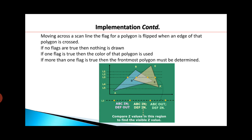If more than one flag is true, then the frontmost polygon must be determined. If you see the figure and consider scan line N3 — N3 is intersecting edges AB and DE. Between the intersection points, we are inside polygon ABC but outside polygon DEF. In that case, the flag of ABC is set to 'in' and the flag of DEF is set to 'out'. That portion will be displayed with the color of polygon ABC.